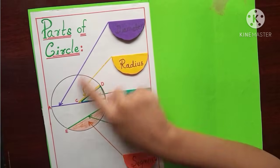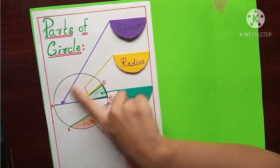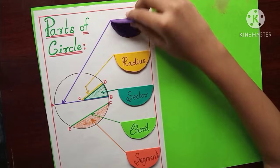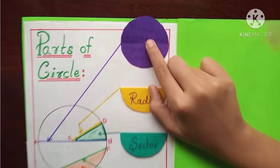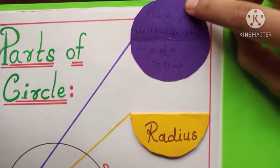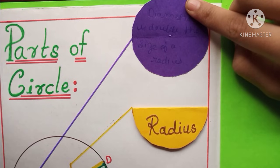Here is the diameter. This is diameter. And here is the definition of diameter. Diameter is double of the size of a radius.